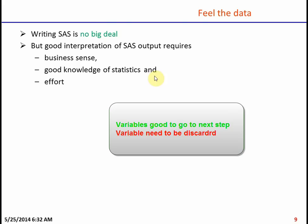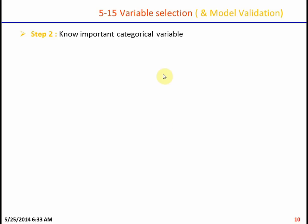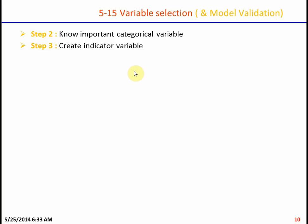Once you get a feel of the data, you know which variables to take and which to reject. You then proceed to select important categorical variables — meaning character variables as well as numeric variables with only a few distinct categories whose meaning is not truly numeric. From these, you create indicator variables, aiming for the minimum number that still captures the distinct behaviors of those categorical variables.